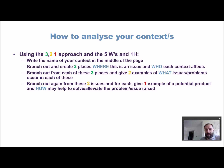Finally, once you've got three places and from each of those places you've decided upon two problems, put one potential product, solution, or starting point to help solve or alleviate that problem. These could be things you know of or just an abstract idea. This way you'll have three places, two problems each, and a potential solution for each — which could be starting points for your NEA.